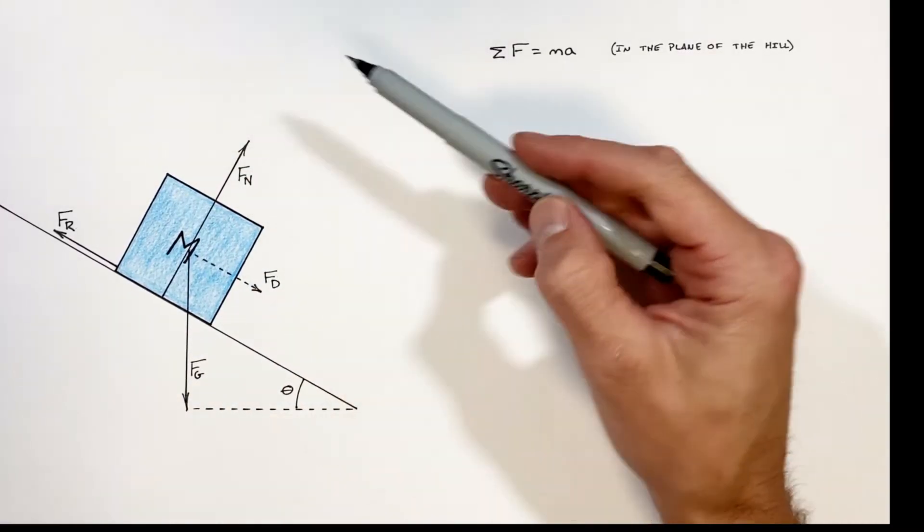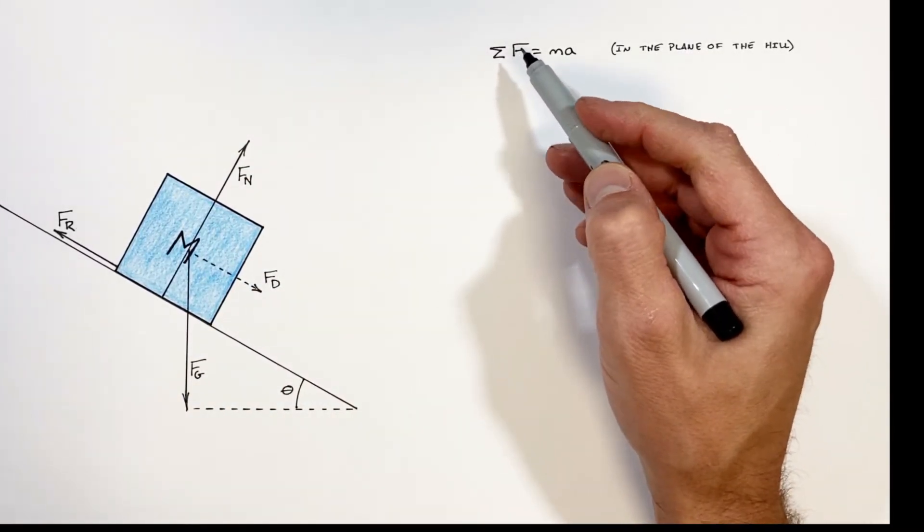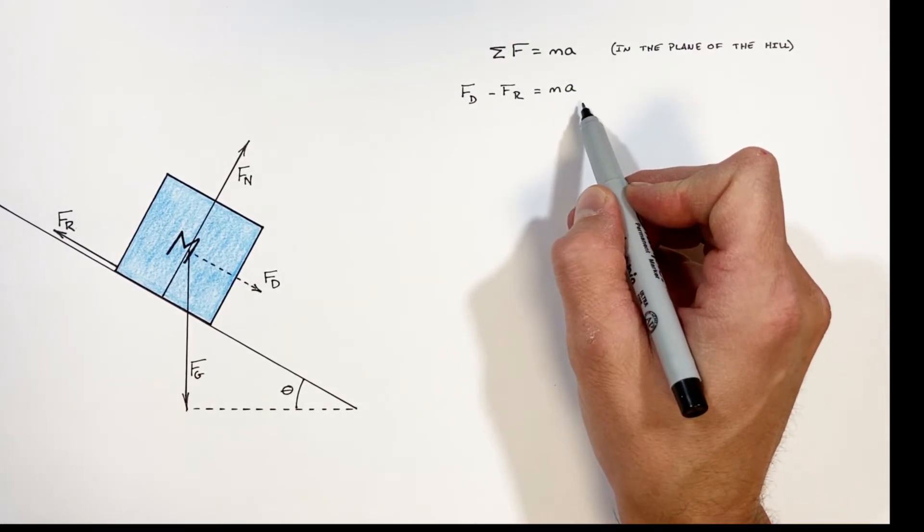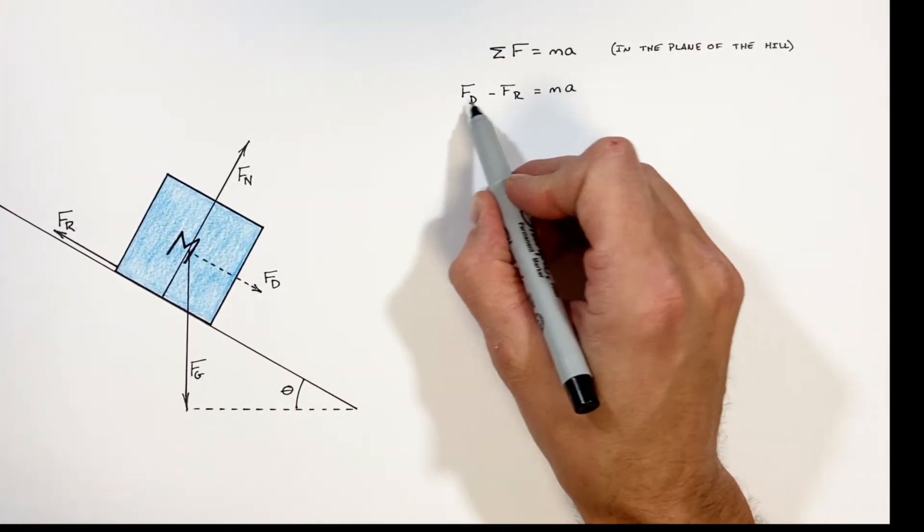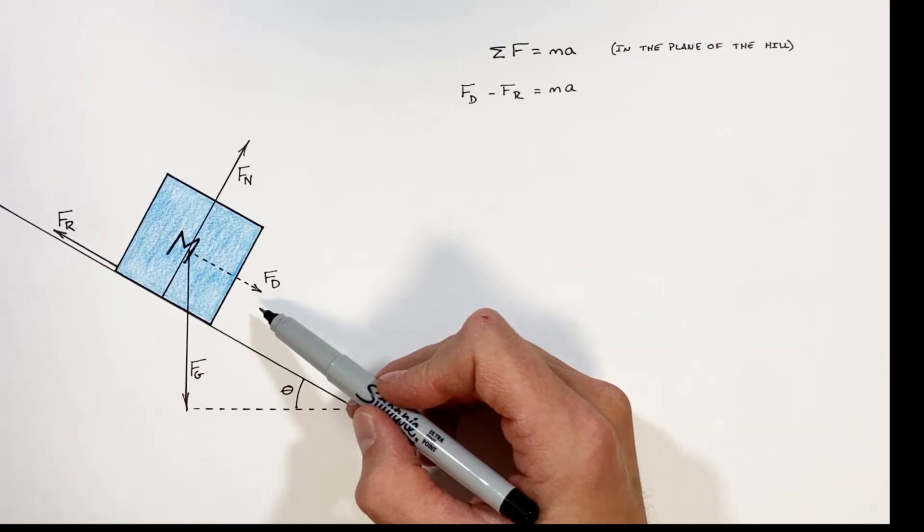So taking our forces and plugging them in here into the sum of all forces side of Newton's second law, we're going to have the force down the hill minus friction equals mass times acceleration. Now the reason I've structured these forces where we have one minus the other is because the two forces are in opposite directions.